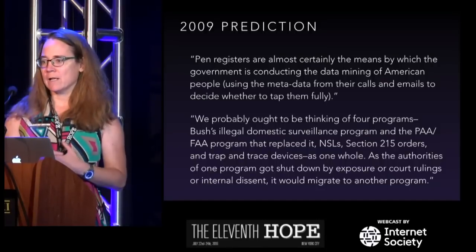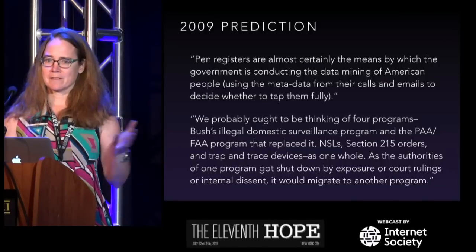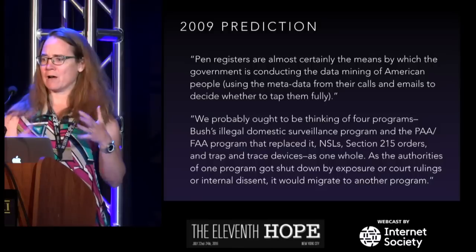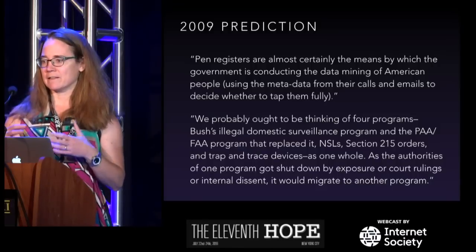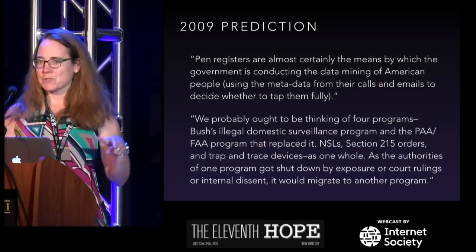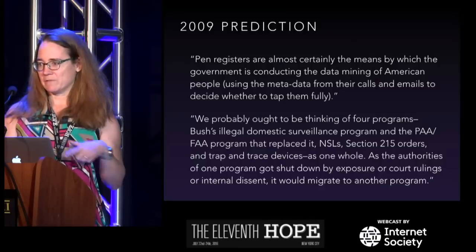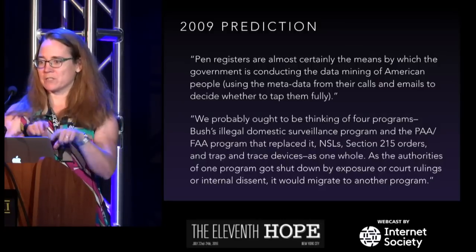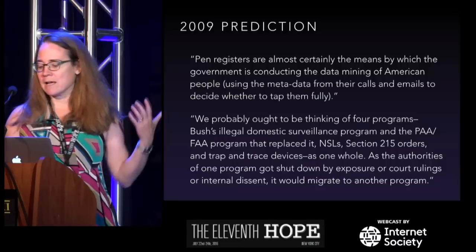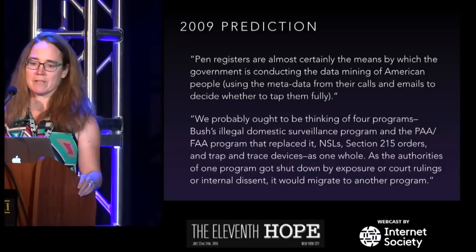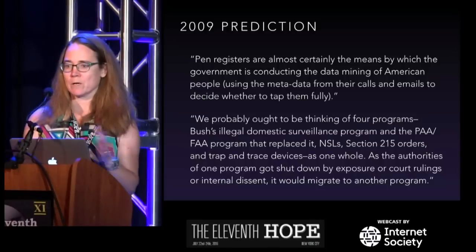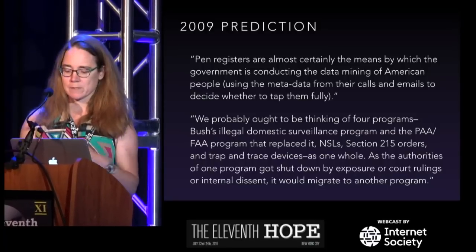The idea behind my title, The Black Holes in the Surveillance Map — and I think I owe this to Quinn Norton — I was describing to her how I guessed in 2009 that they were using pen registers to collect all the metadata of Americans, and she said, what you're doing is finding the negative space and pointing to the surveillance program that lives in that negative space. So I'm going to talk about 2009, some negative space that other people have identified, and some that we should brainstorm, because if we can figure out what's in there, we're going to understand more about what the government is collecting on.